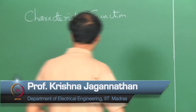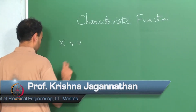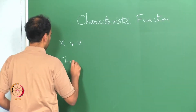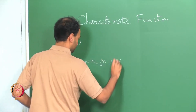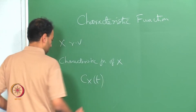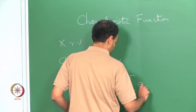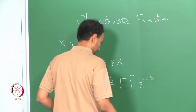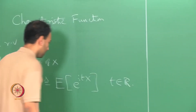Welcome back. Today we will discuss characteristic functions. If x is a random variable, then the characteristic function is defined as follows: c_x(t) is defined as the expectation of e^{itx}, where t is some real number.